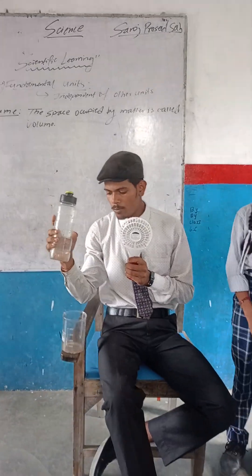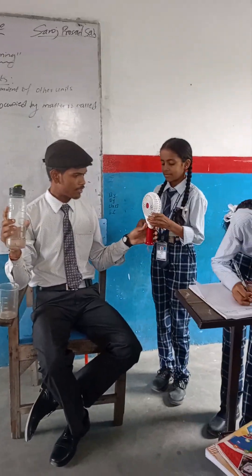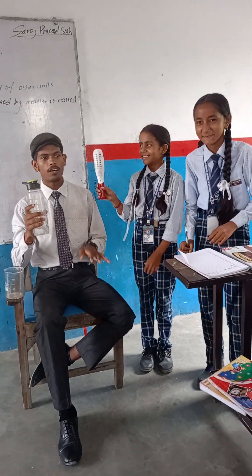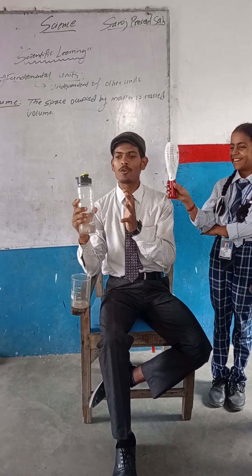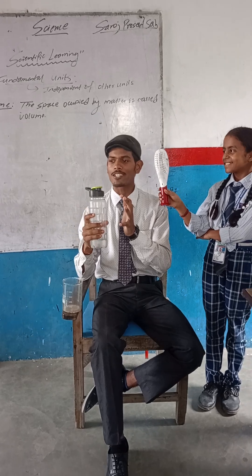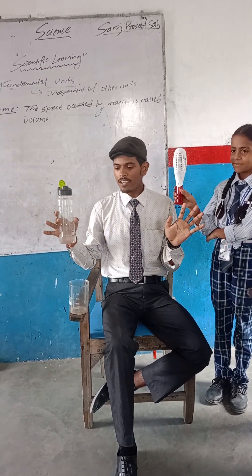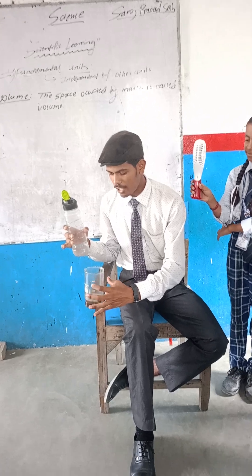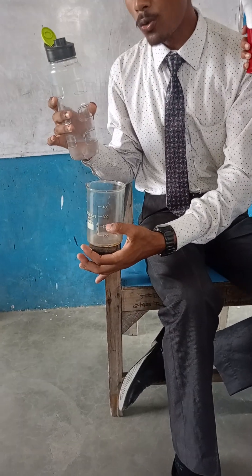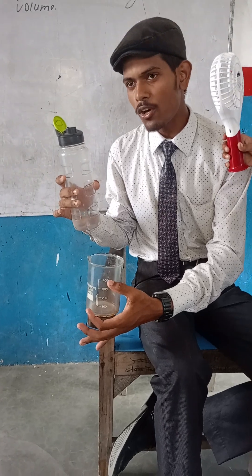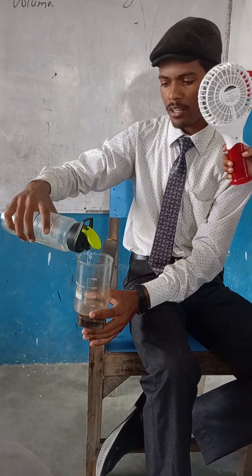Now I am going to put on the volume numbers on the scale. Let's see how to do it. I am going to put on the scale. This is 100 ml, this is 200 ml, this is 300 ml, this is 400 ml. Now I am pouring the liquid here.